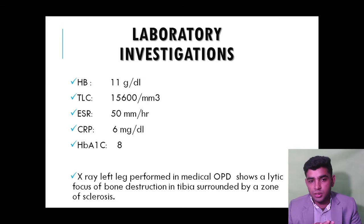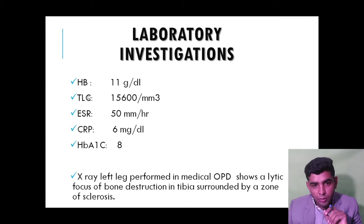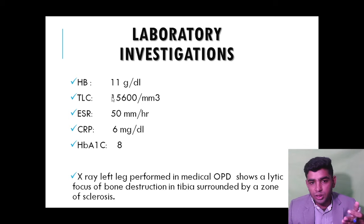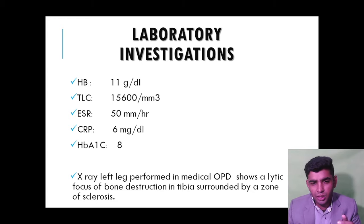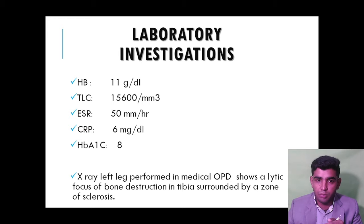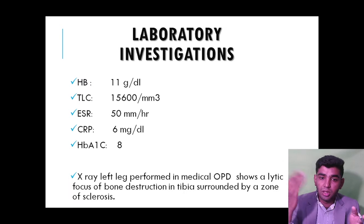For laboratory investigations: hemoglobin level is normal. Total leukocyte count (TLC) — normal range is 4,000 to 11,000 — is elevated at 15,000–16,000 per mm³, meaning leukocytosis. ESR is also increased. CRP C-reactive protein is also raised. HbA1c is 8, confirming the patient is diabetic, since normal value is less than 5.6.